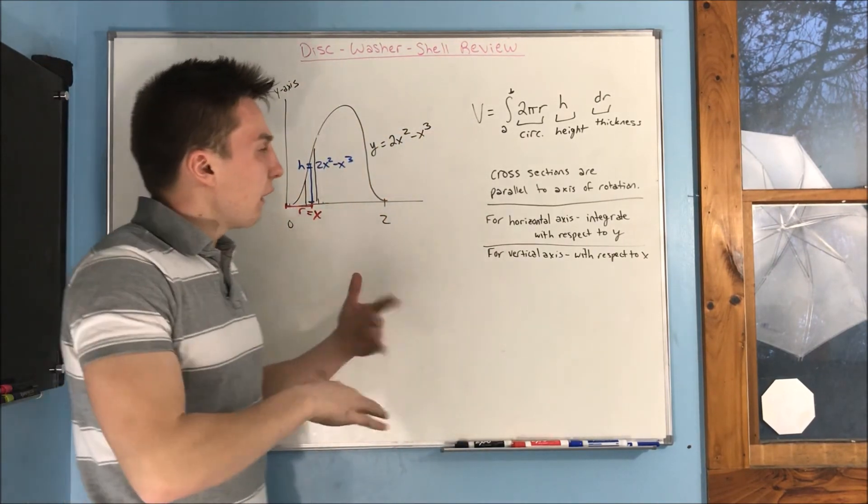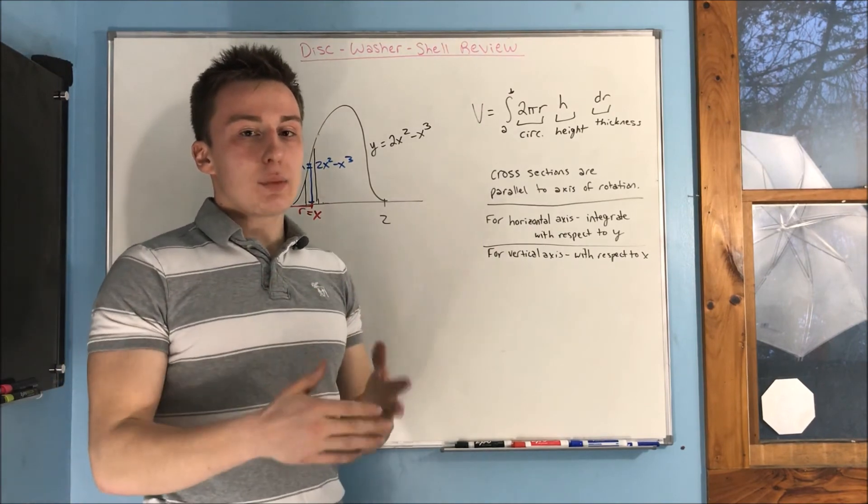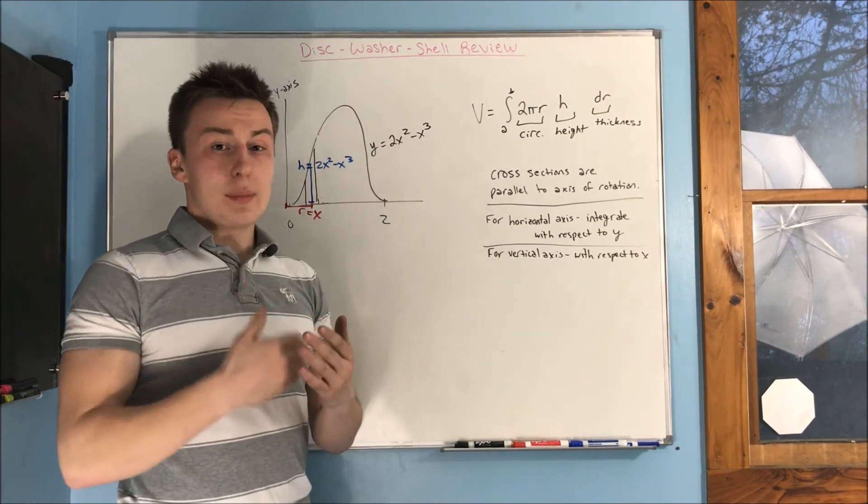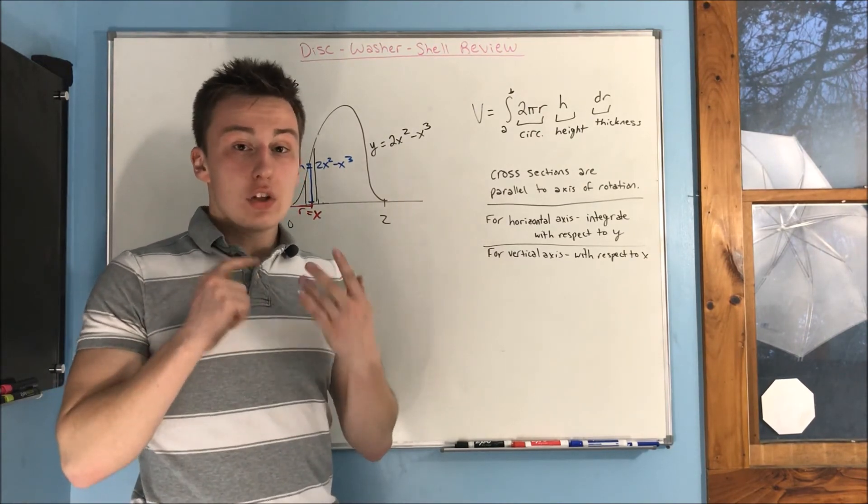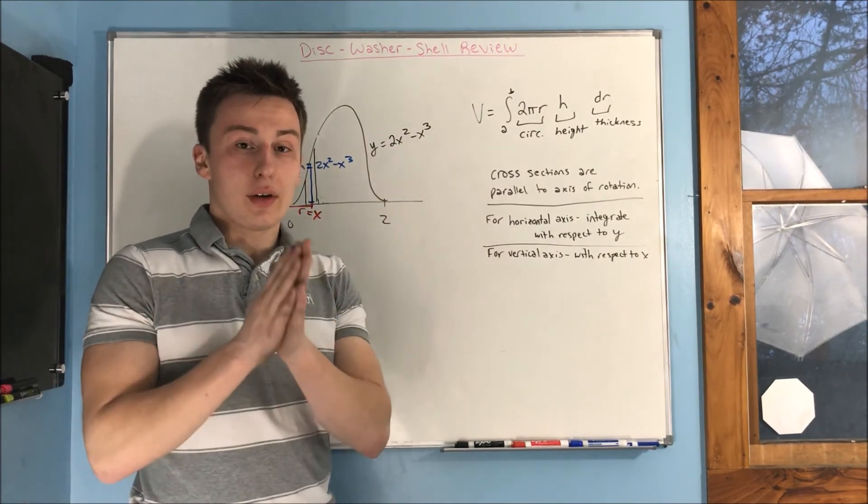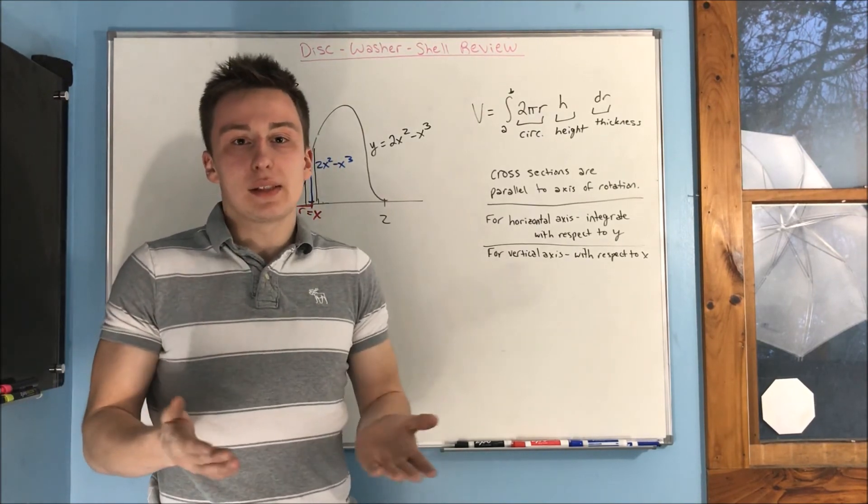For disk method, it's obvious when your cross sections are going to be circles, when revolving around a certain axis or something, then use disk method. Disk method is, by far, I think, the easiest method to use.